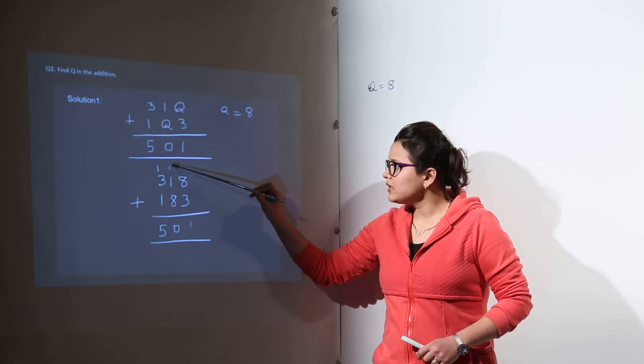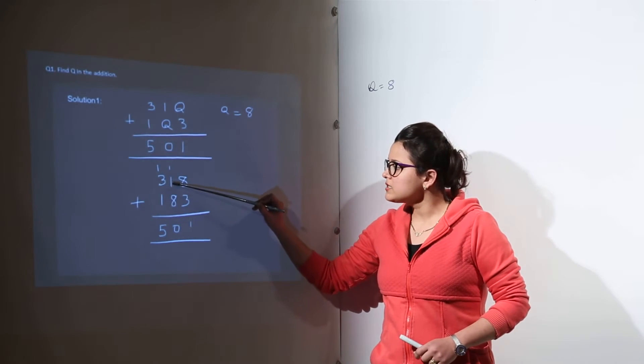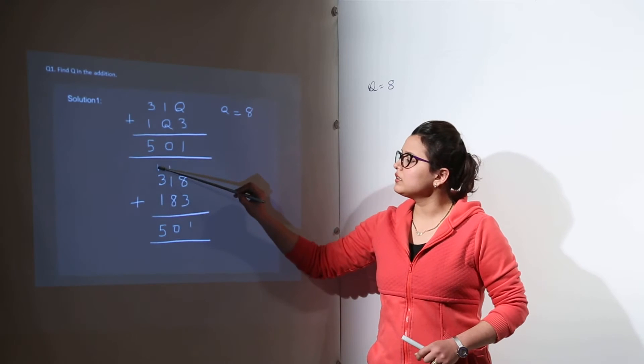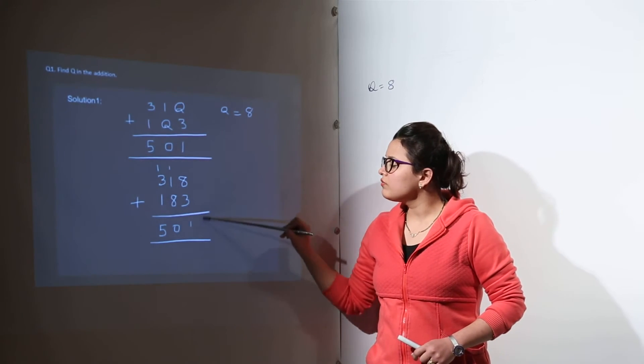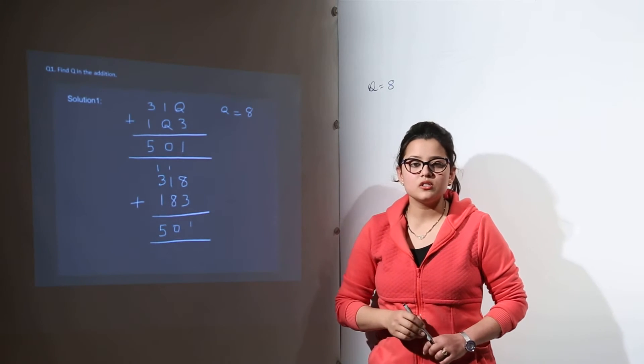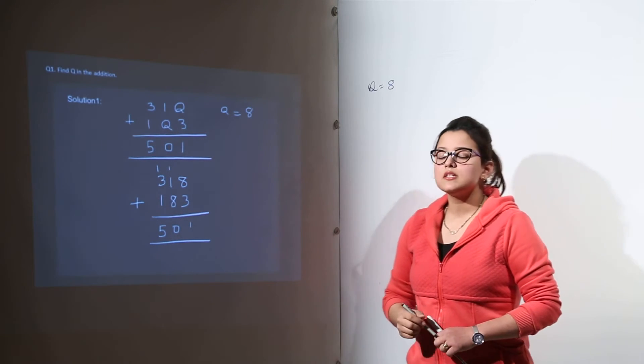So 8, 9, and 10 - you put a 0, made another carry. 3, 4, and 5. So you have got 501 as the addition or as the sum. That means the value of q that we assumed earlier was particularly correct.